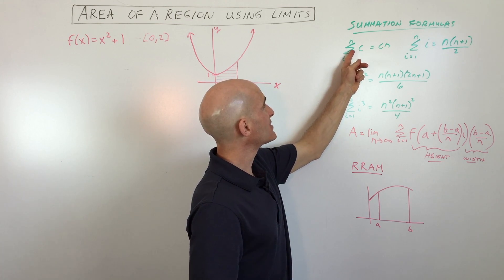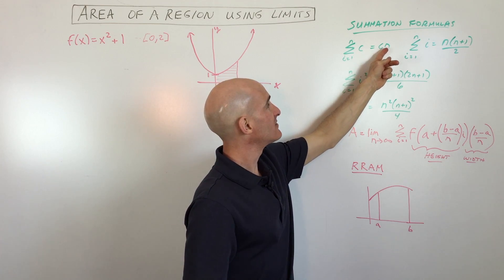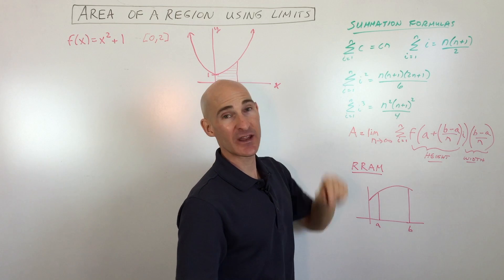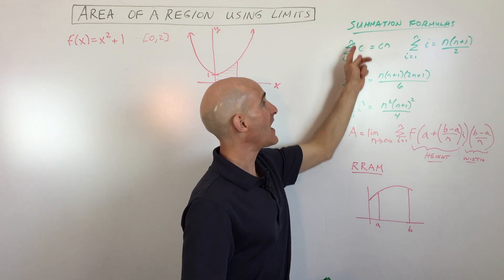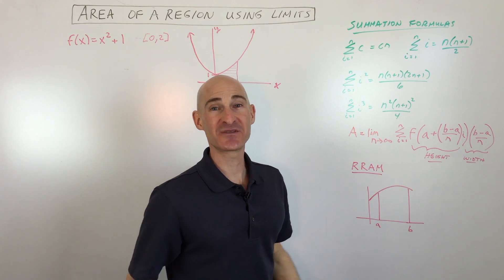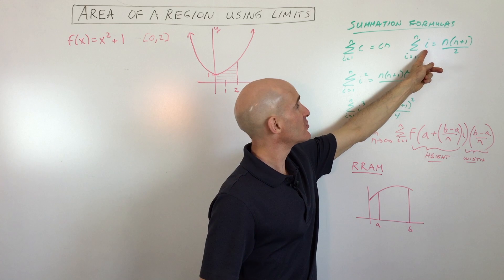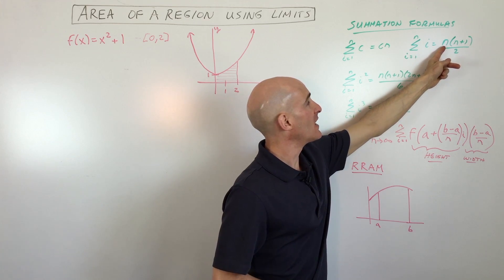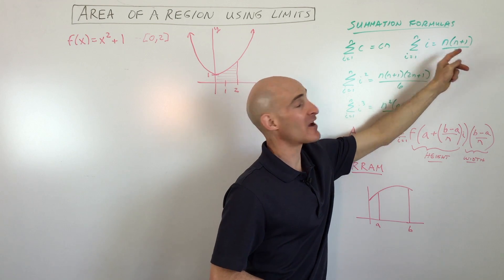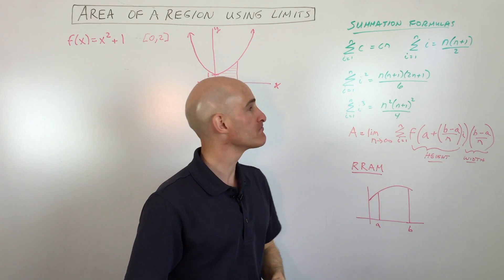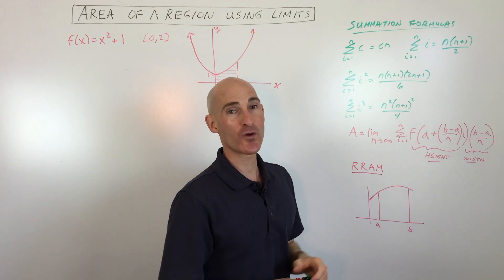The sum of a constant will be the constant times n, meaning how many of those you have. So if you're adding up two, ten times, it's just going to be two times 10, which is 20. This is the sum of consecutive integers — you would take 10 integers, like one through 10, and it would be 10 times 11 divided by two. And then there's the sum of squares and the sum of cubes. We're going to be using these summation formulas.